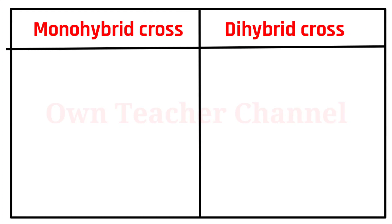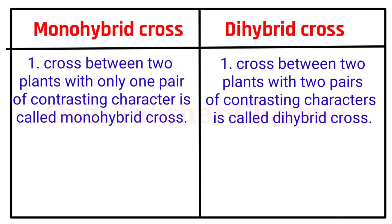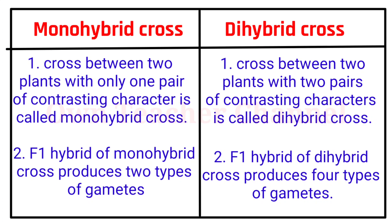Monohybrid cross: a cross between two plants with only one pair of contrasting characters. Dihybrid cross: a cross between two plants with two pairs of contrasting characters. F1 hybrid of monohybrid cross produces two types of gametes; F1 hybrid of dihybrid cross produces four types of gametes.